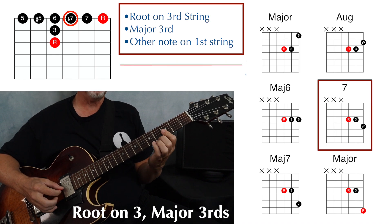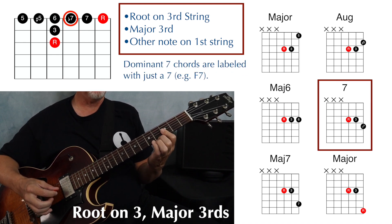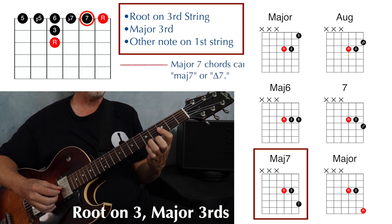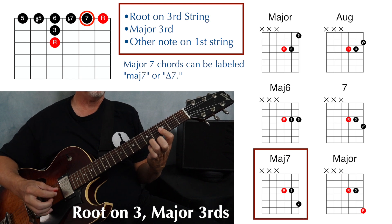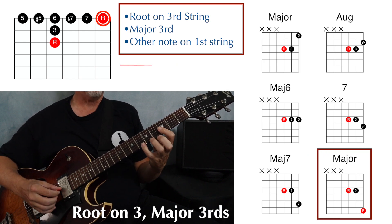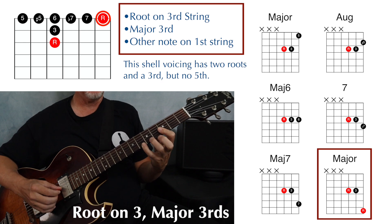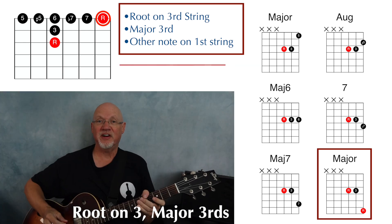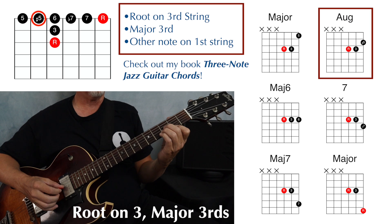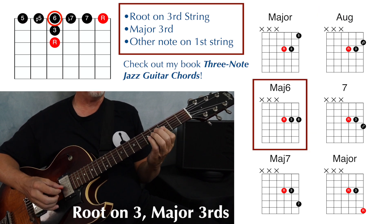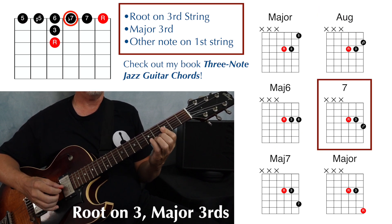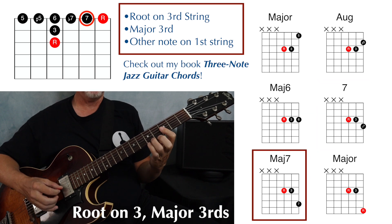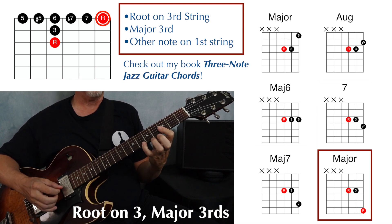If I move to the flat seven, we have a dominant seven chord — B flat seven. Move it again, I now have a B flat major seven. Move it one more time, I have another B flat major chord, this time playing the root, the third, and another root. Here's that entire sequence: major, augmented, major six, dominant seven, major seven, and another major chord.